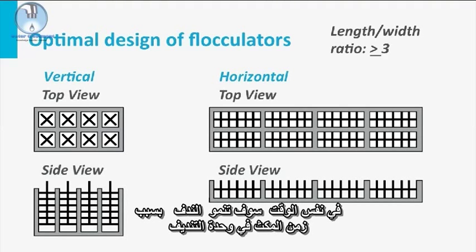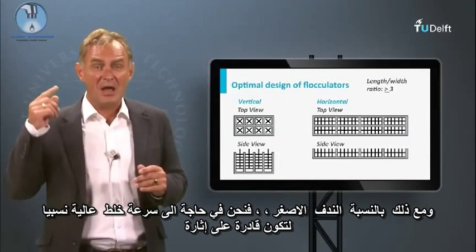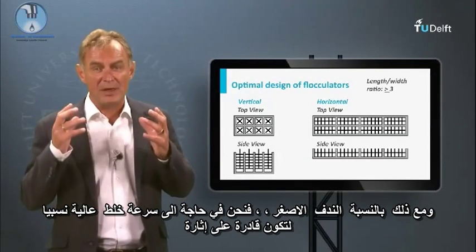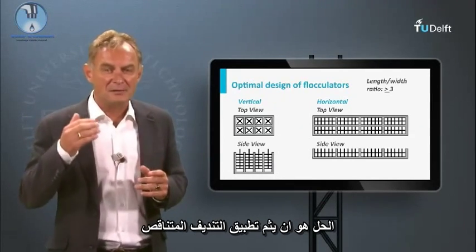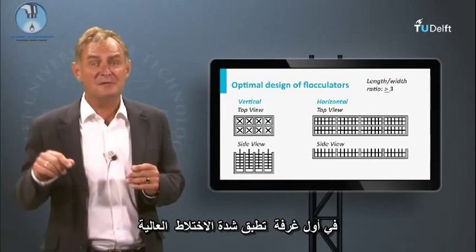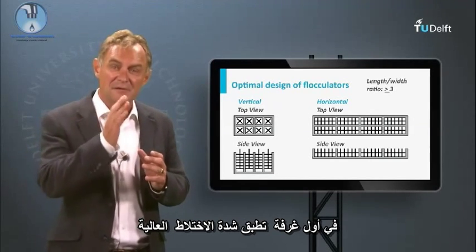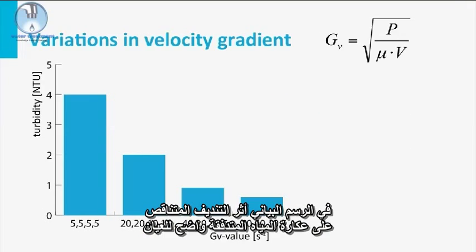In the meantime, the flocs will grow with their residence time in the flocculation unit. Larger flocs are more sensitive to floc break-up, so slow mixing is required. For smaller flocs, however, a relatively high mixing intensity is needed to provoke collision of the pin flocs. The solution is to apply tapered flocculation: in the first compartments, higher mixing intensities are applied and gradually the intensities are diminished. In the graph, the effect of tapered flocculation on effluent water turbidity is clearly visible.